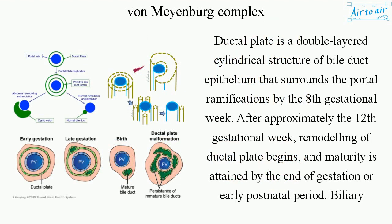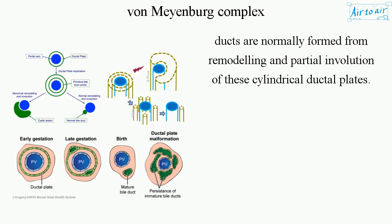The ductal plate is a double-layered cylindrical structure of bile duct epithelium that surrounds the portal ramifications by the eighth gestational week. After approximately the twelfth gestational week, remodeling of the ductal plate begins, and maturity is attained by the end of gestation or early postnatal period. Biliary ducts are normally formed from remodeling and partial involution of these cylindrical ductal plates.